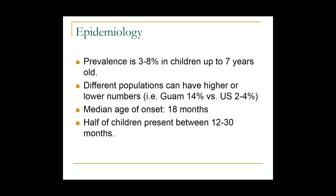Epidemiology — how common is this? It really depends on the country. The overall prevalence is between 3 to 8 percent of children up to 7 years old, clearly more common than the actual prevalence of epilepsy in the general population. About 2 to 4 percent of children in the United States will have febrile seizures, as opposed to Guam where it's about 14 percent. The median age of onset is about a year and a half, and 50 percent of patients will present between 12 and 30 months of age.